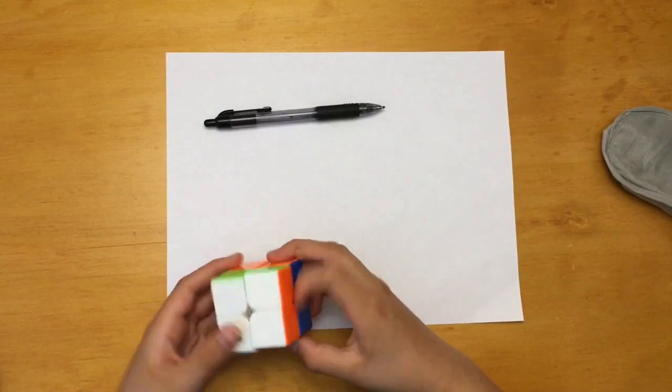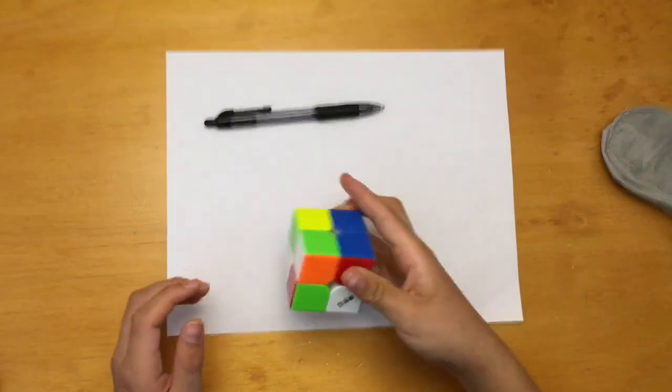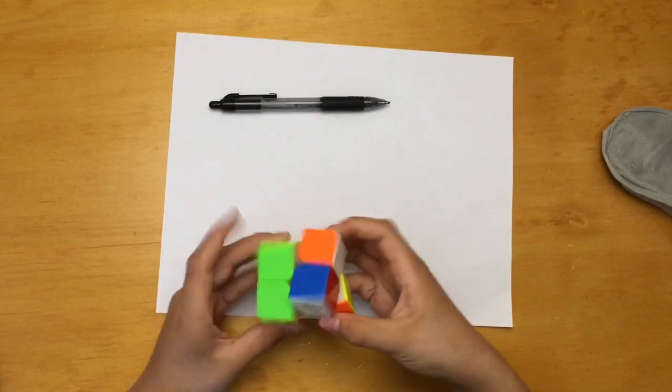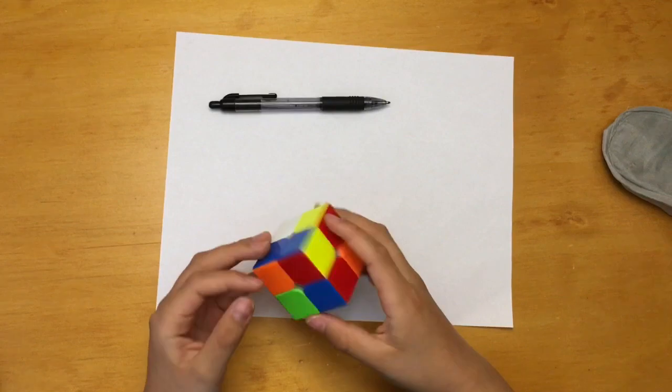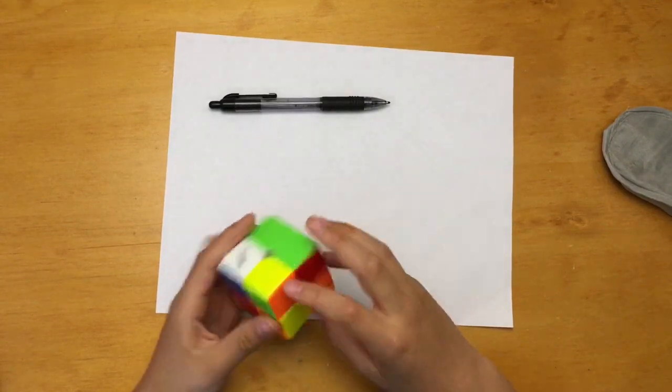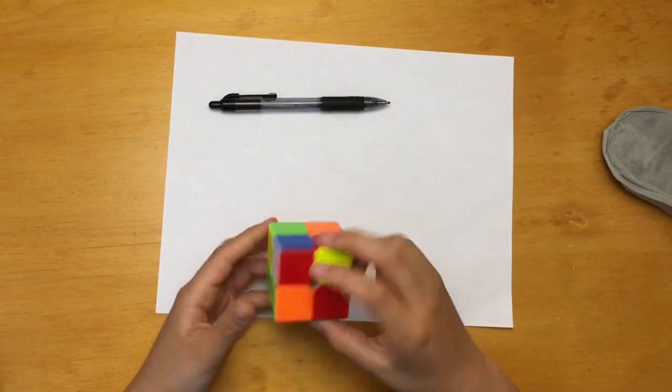With your 2x2 first thing you want to do is give it a nice hand scramble here. That's scrambled up enough, then you want to find an easy solution for a side.